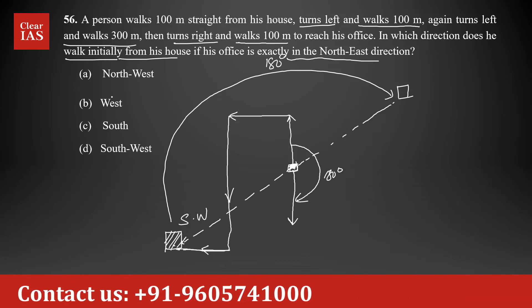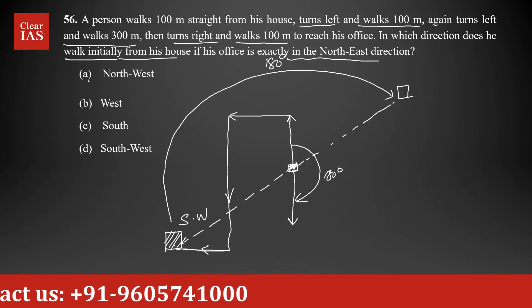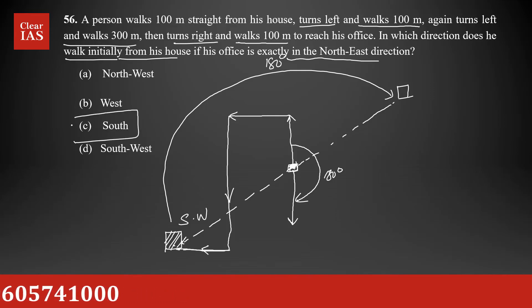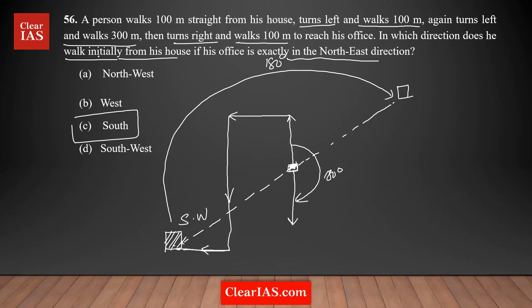So your answer is option C. In which direction does he walk initially from his house? He needs to walk south. I hope this is clear — we are rotating the entire figure 180 degrees. So this also is rotated 180 degrees.